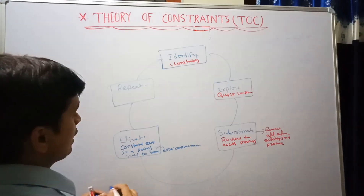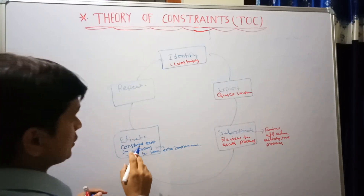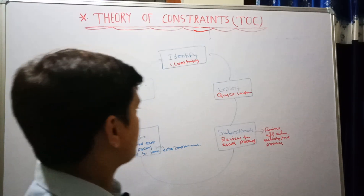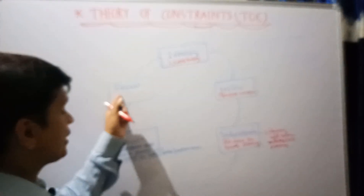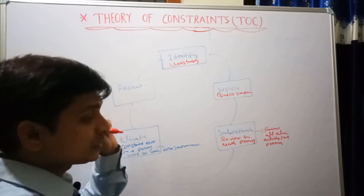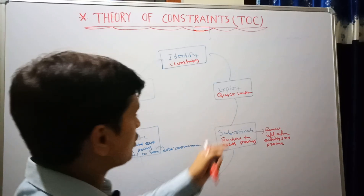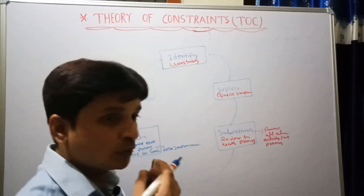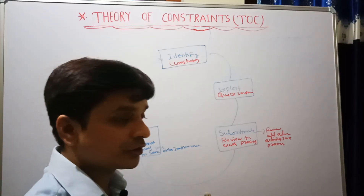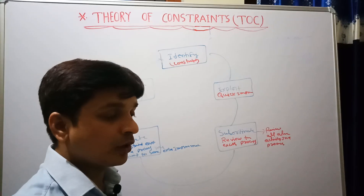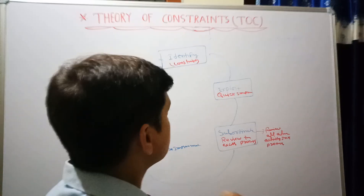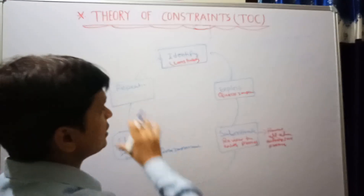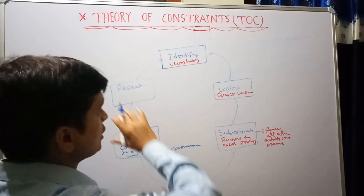The fifth step is Repeat. During all the four previous steps, if a constraint is still available, you then need to find the next constraint and work on it. You need to remove the first constraint and then work on another constraint. This is a continuous chain, just like a PDCA cycle — plan, do, check, act. It is a repeated process where you keep finding the next constraint.